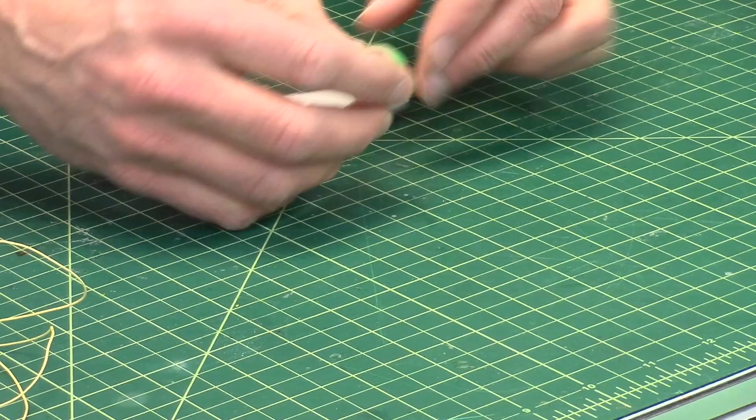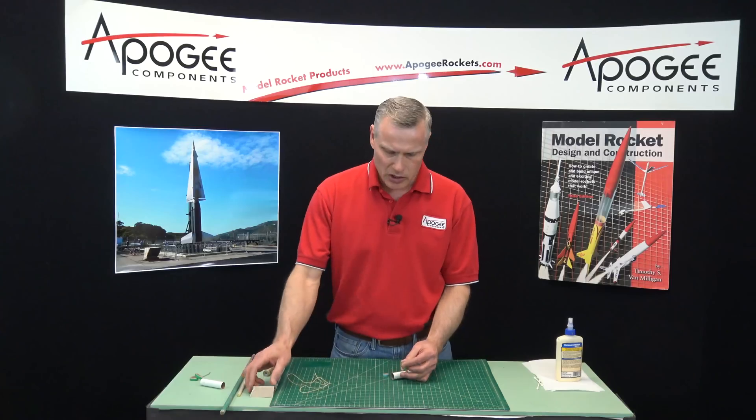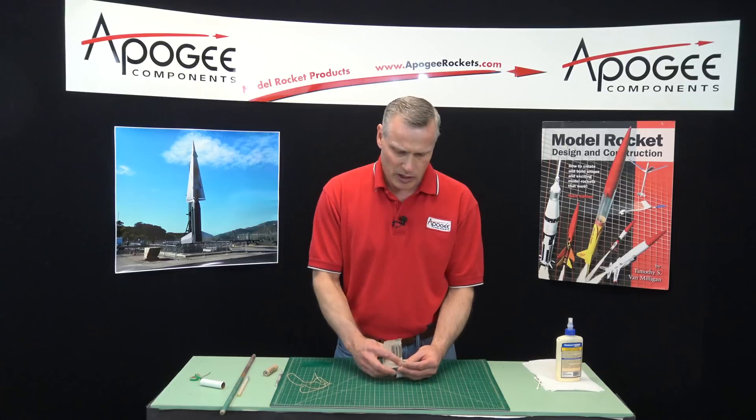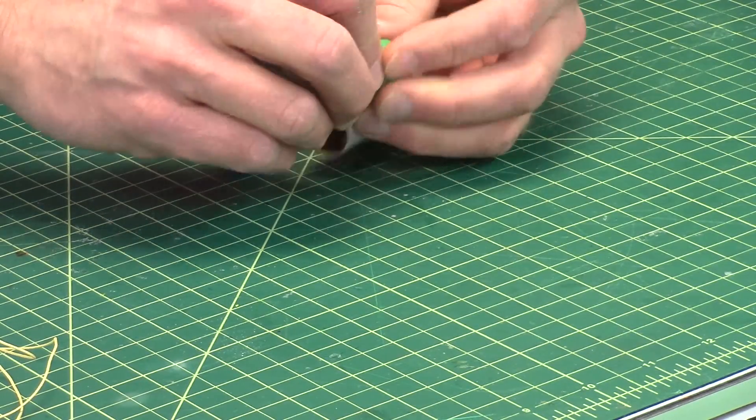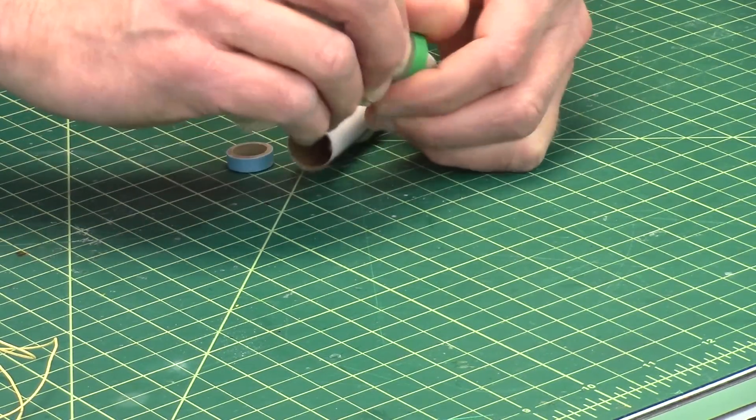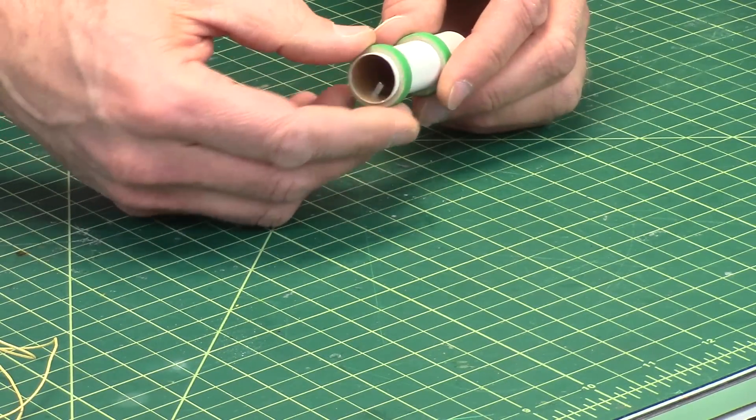Now if your rings are hard to put onto the tube, if you have a hard time getting them started, just take some sandpaper and sand out the inside of the ring. Like that. And that should help you to get it over the tube.